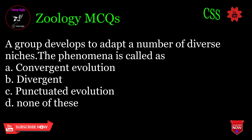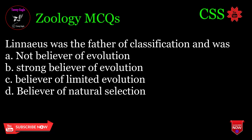A group develops to adapt a number of diverse niches. The phenomenon is called: A. Convergent evolution, B. Divergent evolution, C. Punctuated evolution, D. None of these. Correct answer: B.